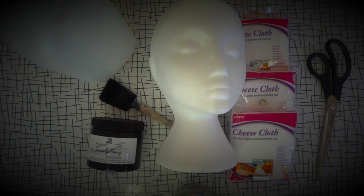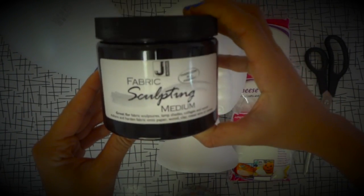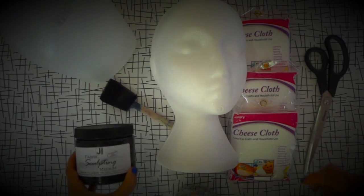You need a foam head form, cheesecloth, a sponge brush, scissors, plastic wrap, floral wire, and Jacquard's fabric sculpting medium.